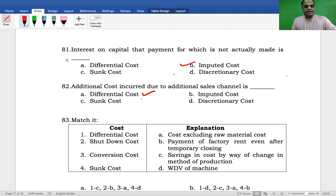Next: Match it. Cost includes: 1. Differential Cost, 2. Shut Down Cost, 3. Conversion Cost, 4. Sunk Cost. Explanations: a. Cost excluding raw material cost (conversion), b. Payment of factory rent even after temporary closing (shutdown cost), c. Savings in cost by way of change in method of production, d. WDV of machine (sunk cost).